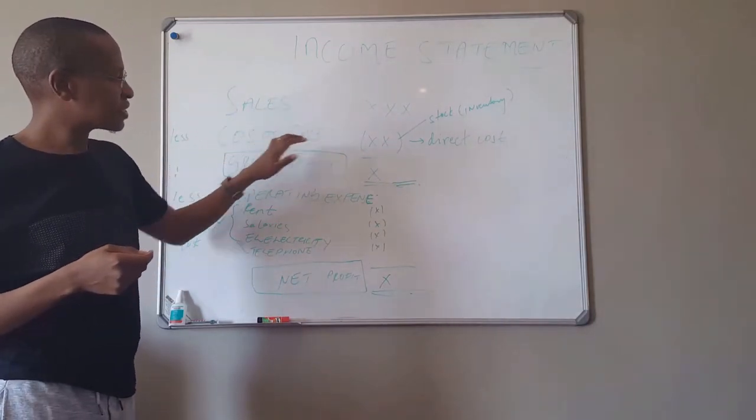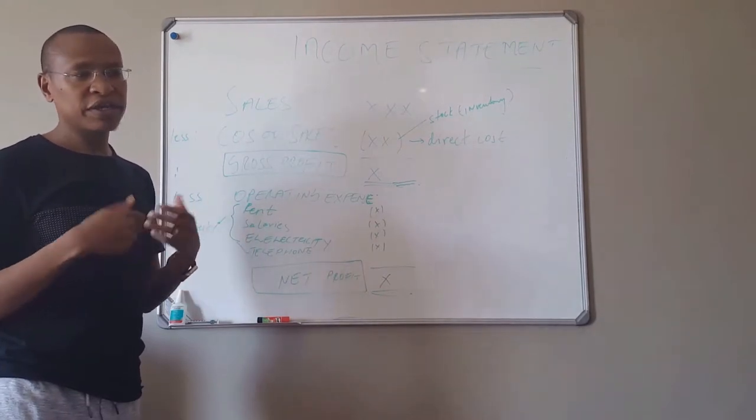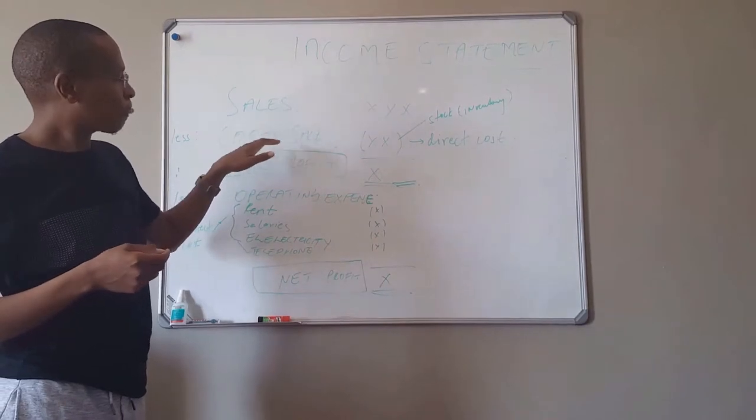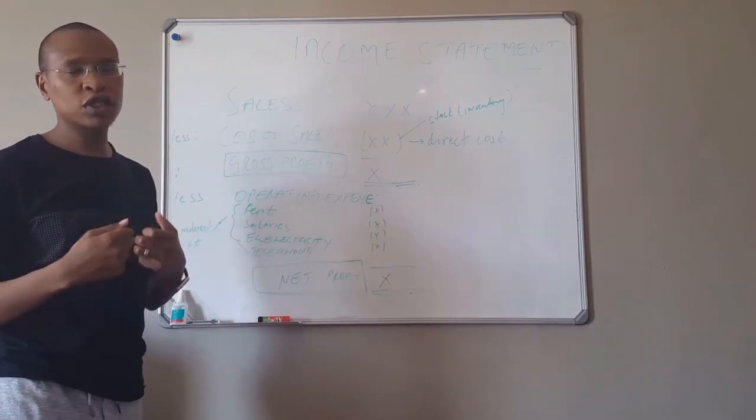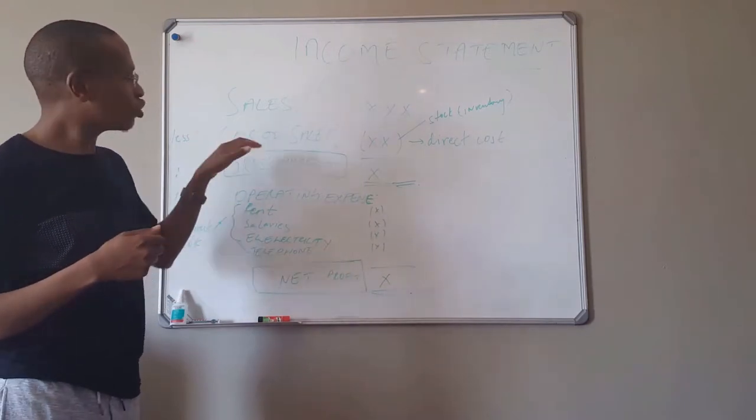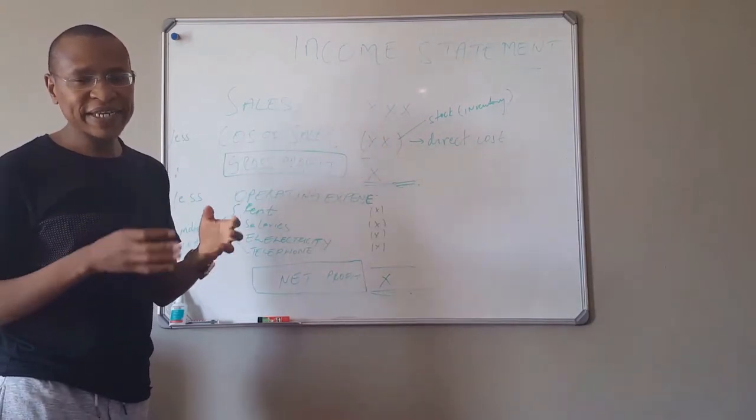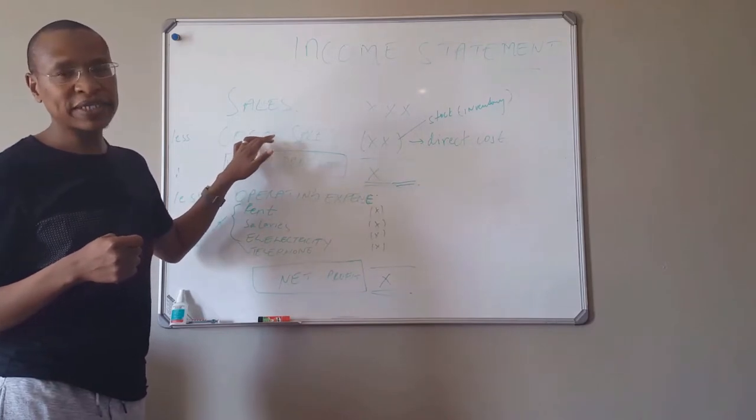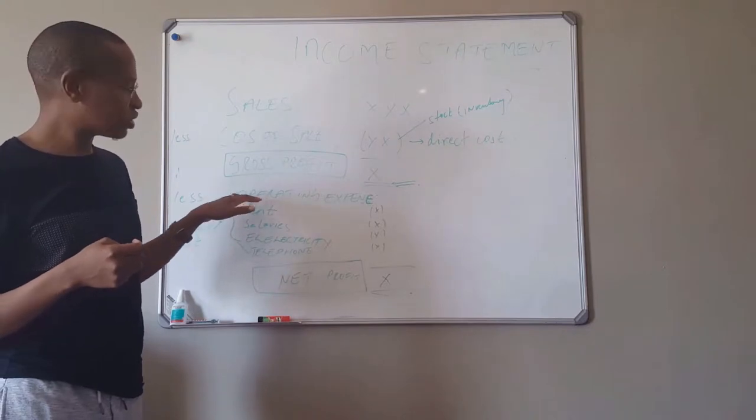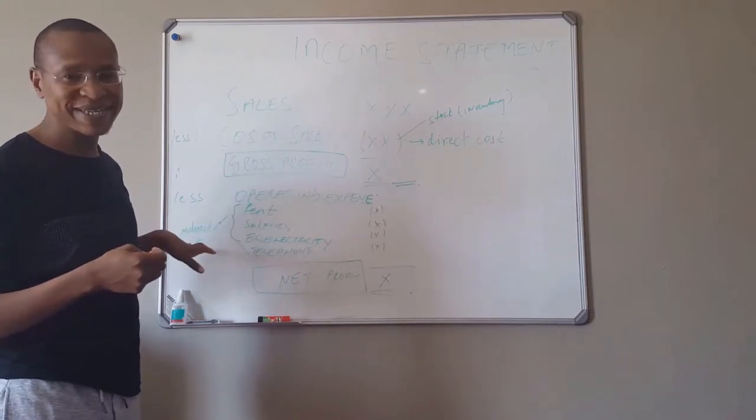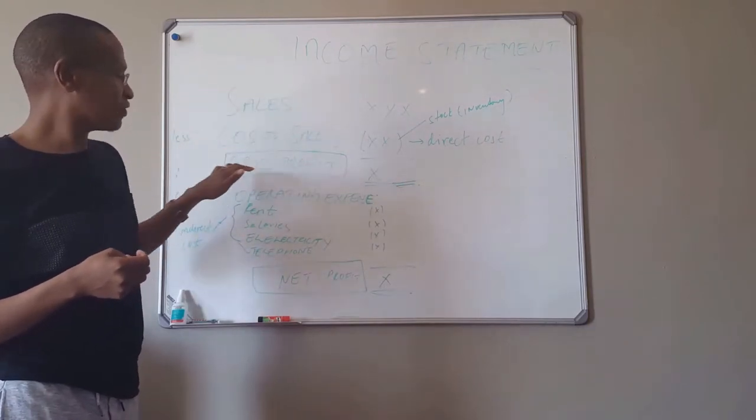Then it includes cost of sales. Say you are selling tomatoes or any product - the amount you use to buy those stocks that you're going to sell will be called the cost of sales. Those are basically direct costs related to that particular sales. Sales less cost of sales equals gross profit.